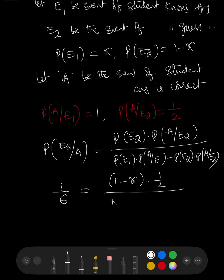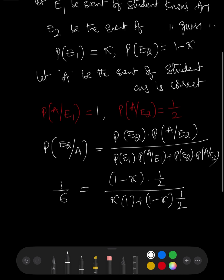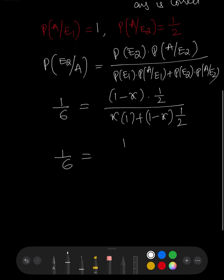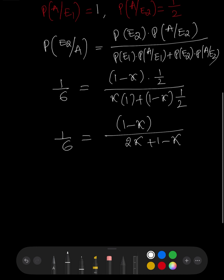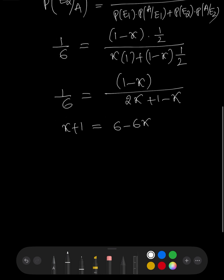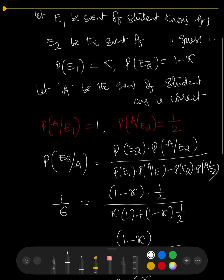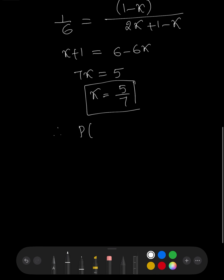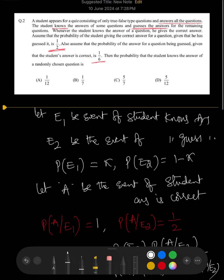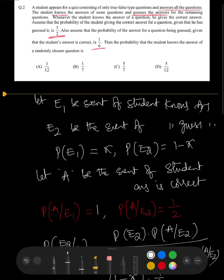Simplifying by taking 1/2 common and cancelling, we get: 1/6 = (1−x) / (2x + 1−x). Cross-multiplying gives x + 1 = 6 − 6x, so 7x = 5, therefore x = 5/7. Thus the probability that the student knows the answer is P(E1) = 5/7, so option C is correct.